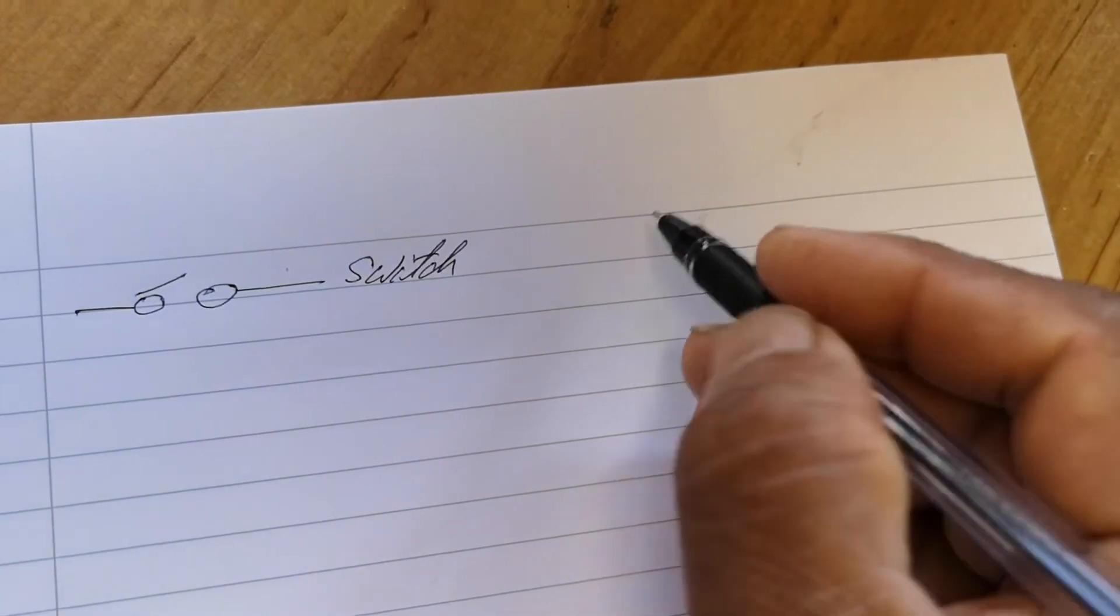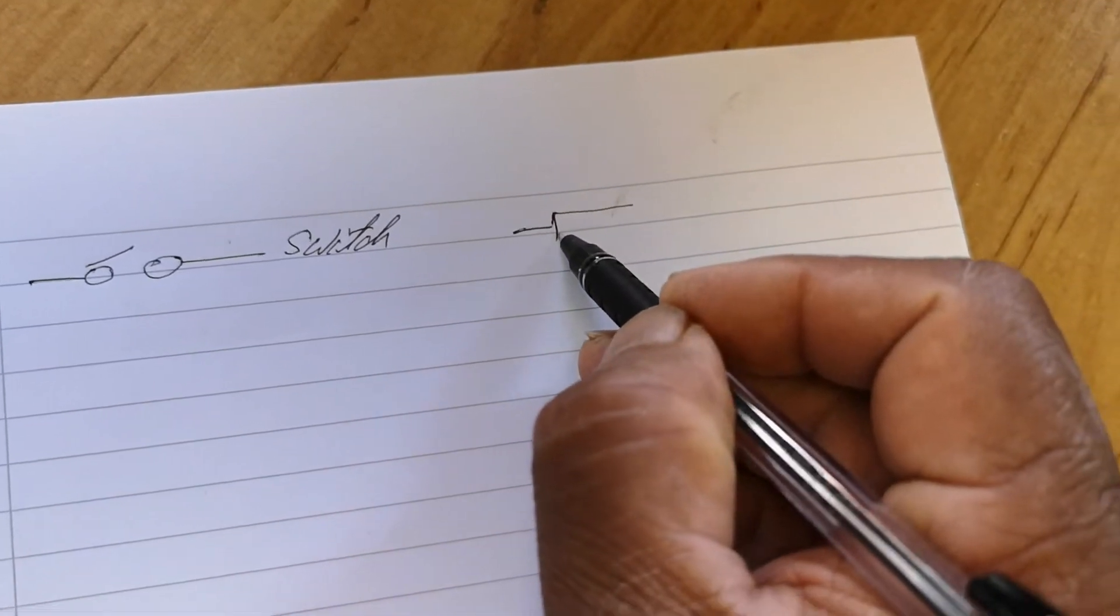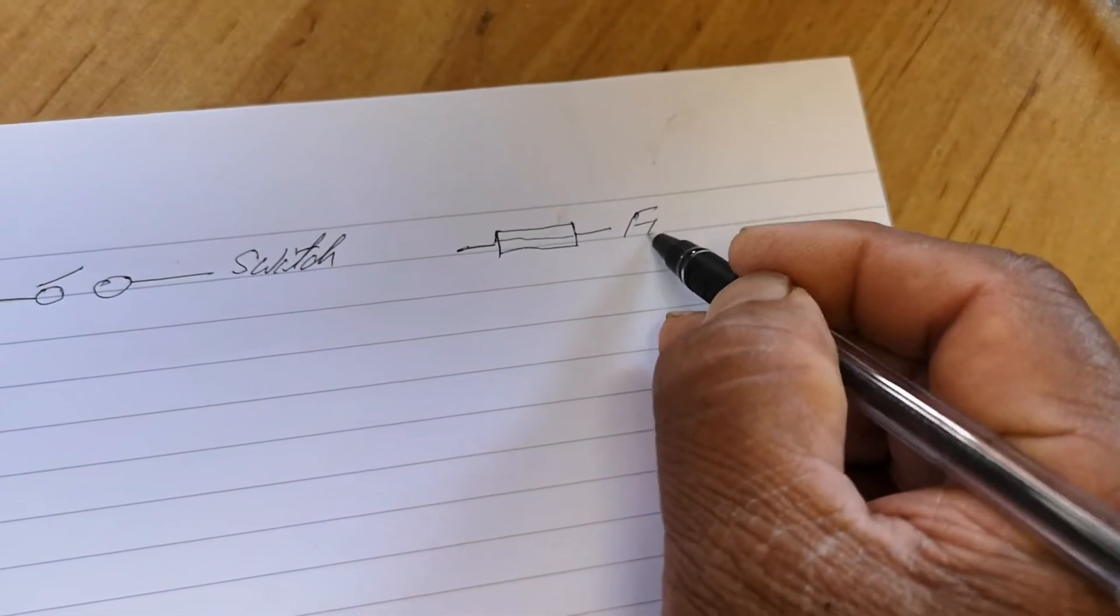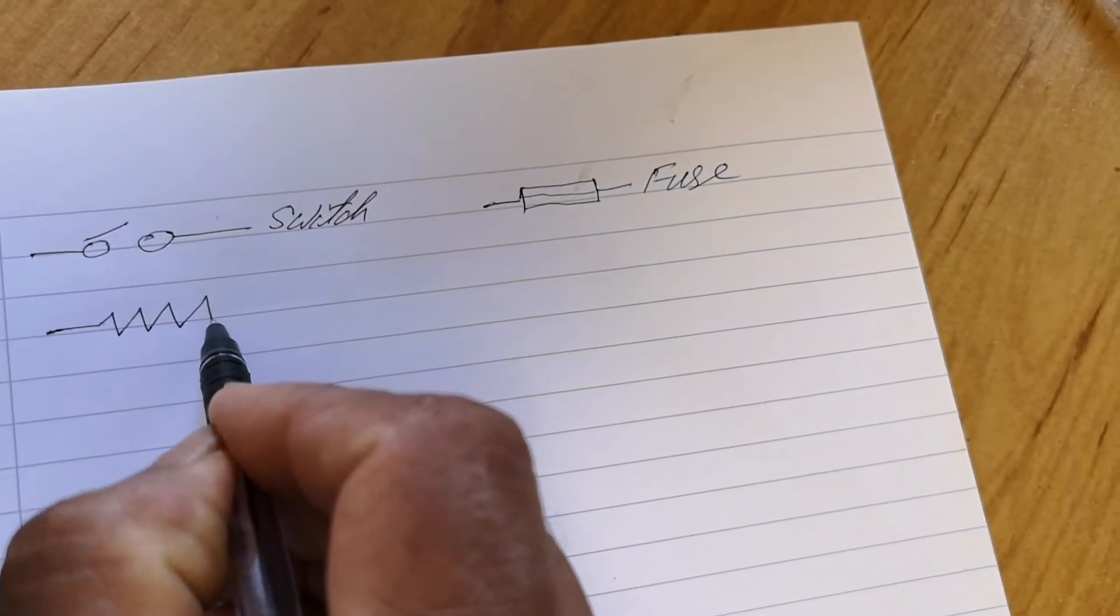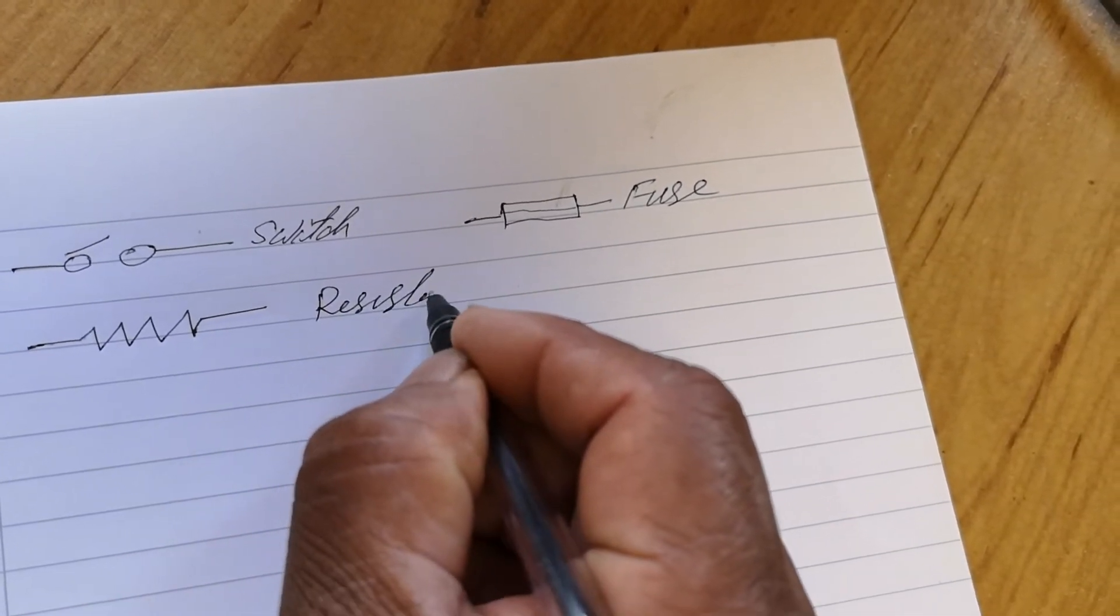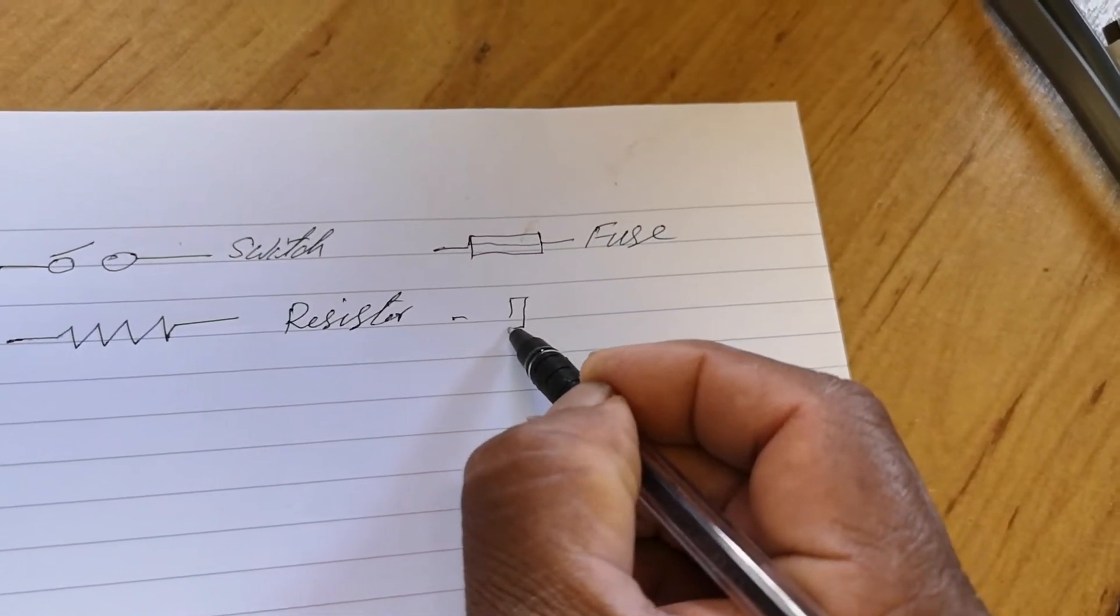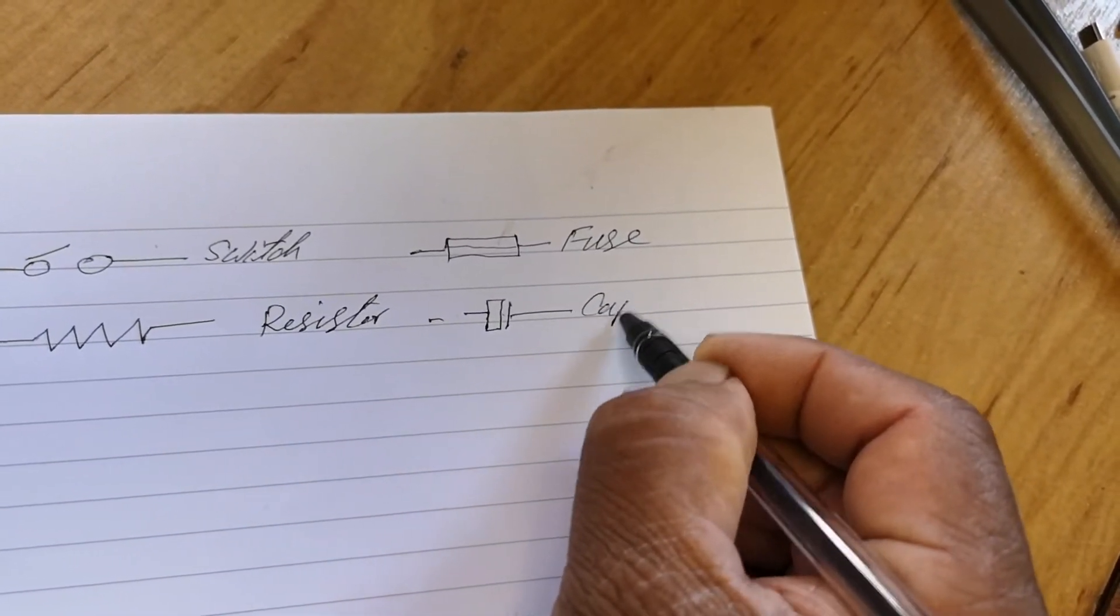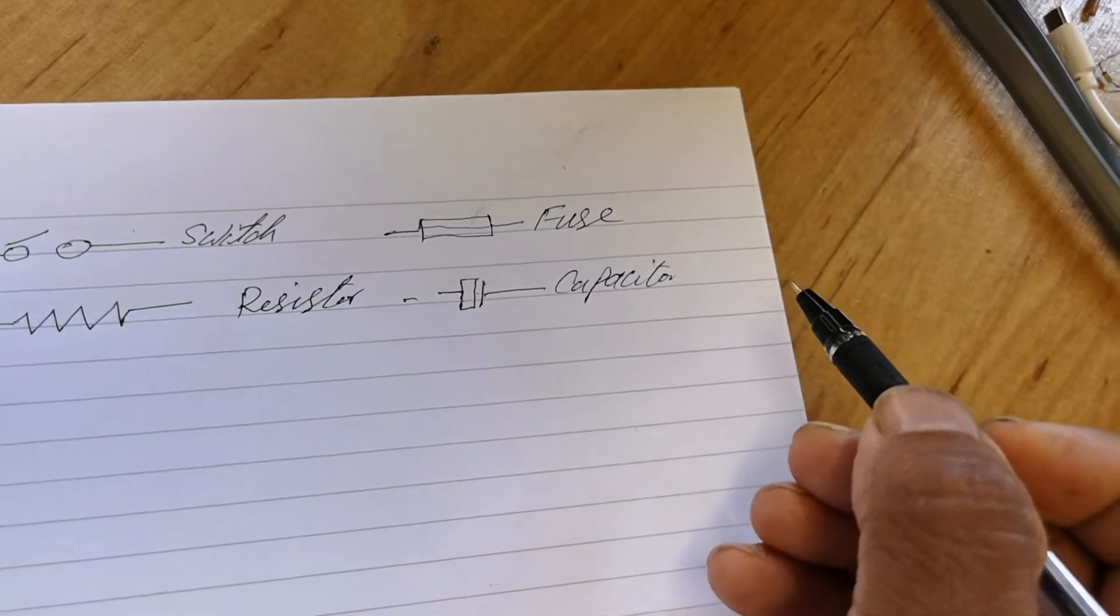So this is a switch symbol, and this is a fuse. This is a resistor. Resistor. That is a capacitor. This is a capacitor.